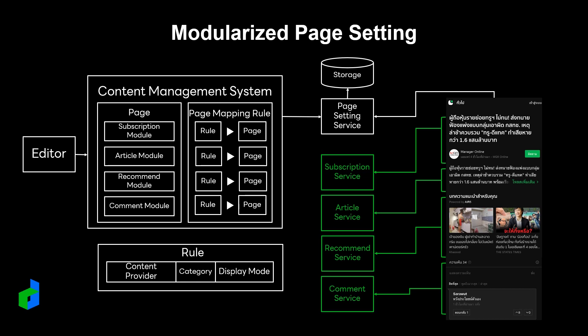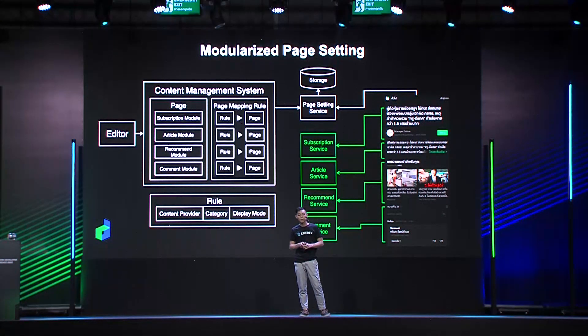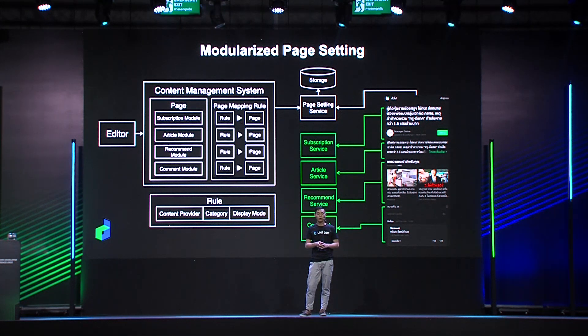Editors are able to decide whether the subscribe button is shown in the subscription module. The article module's display mode can be decided by different content providers. The recommend module may be set to different numbers of articles. The comment module can be hidden based on different conditions. By the microservice architecture, the page setting service does not need to know how the module data and its external third-party APIs work — it only needs to know how to access the necessary data to compose the module. The module will then send another request to its corresponding microservice to get data.